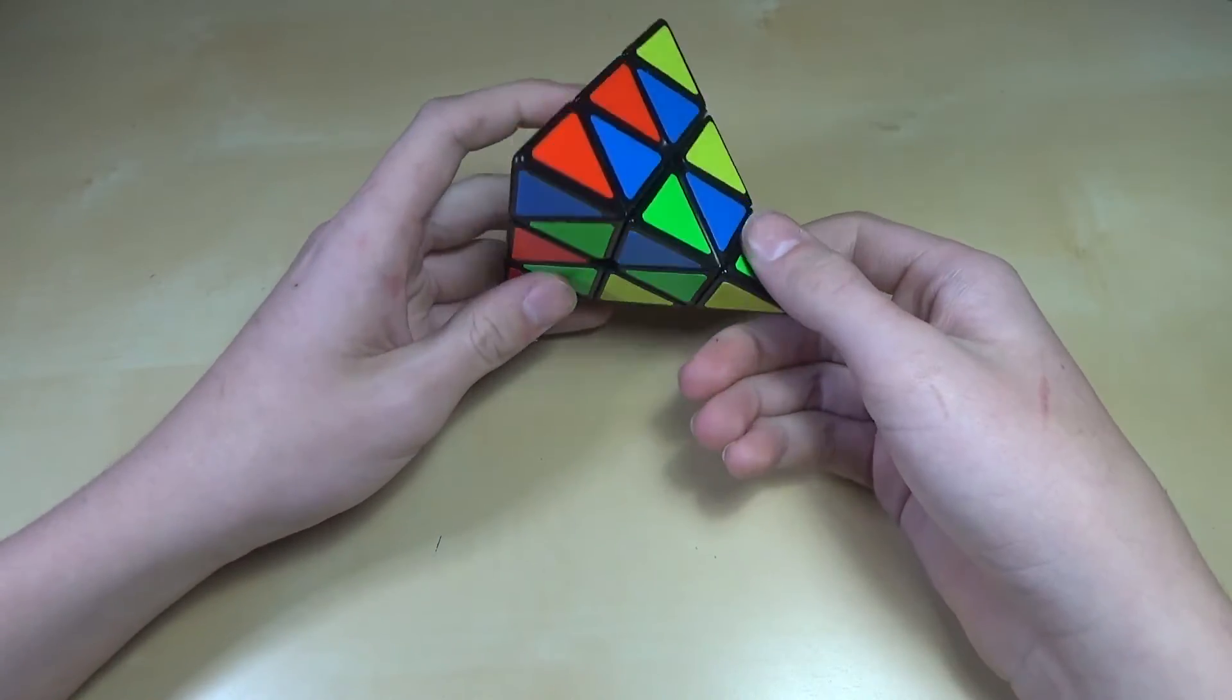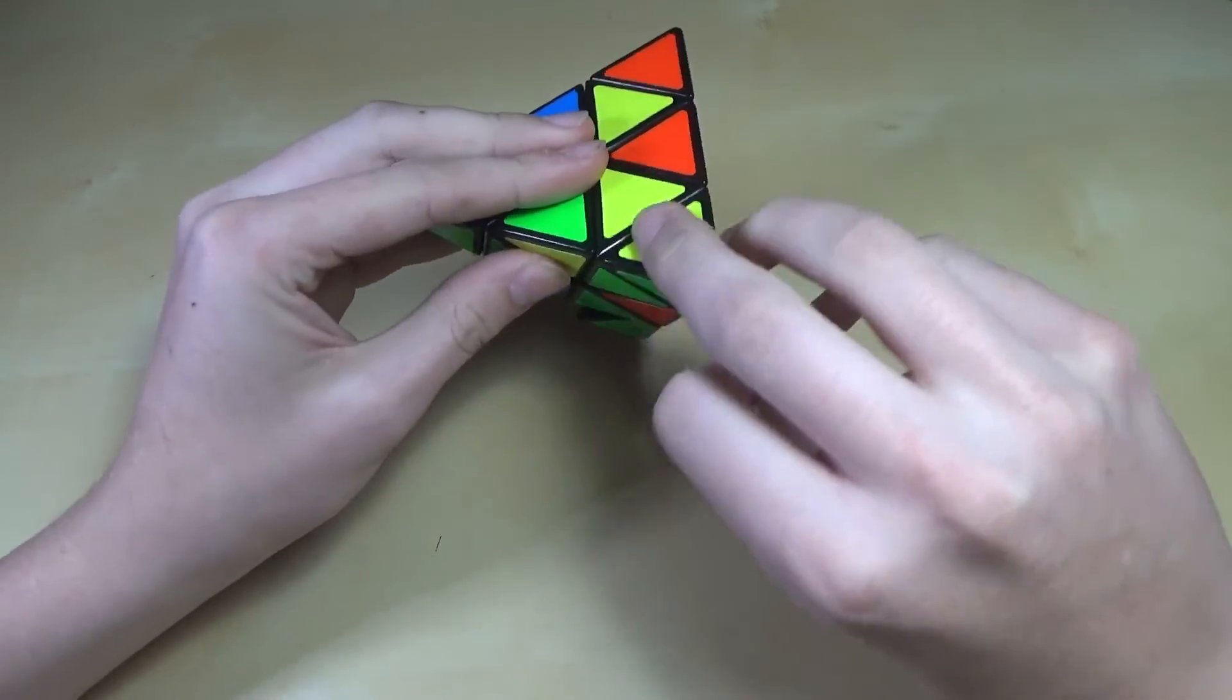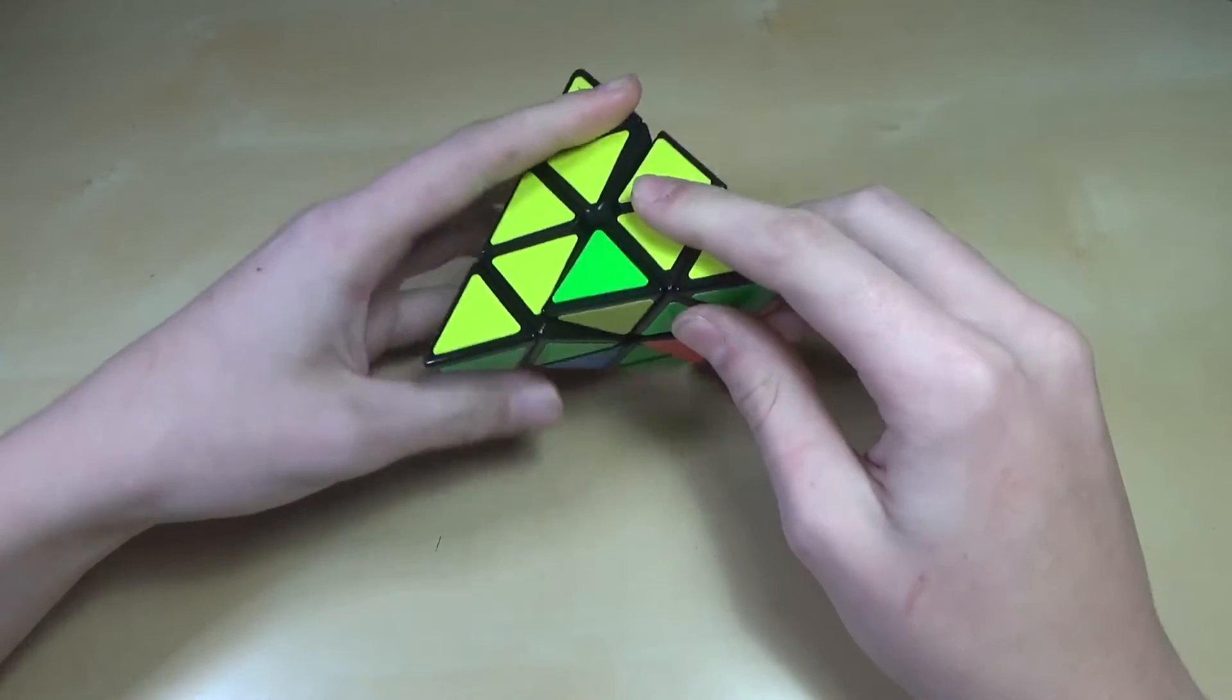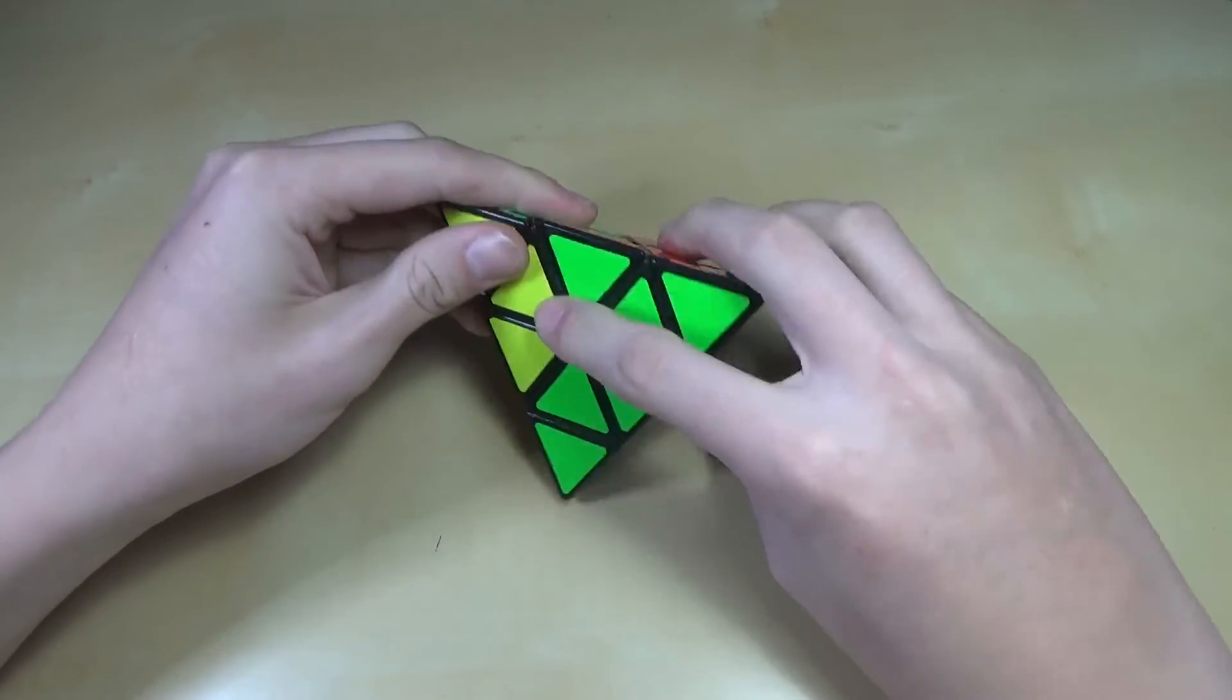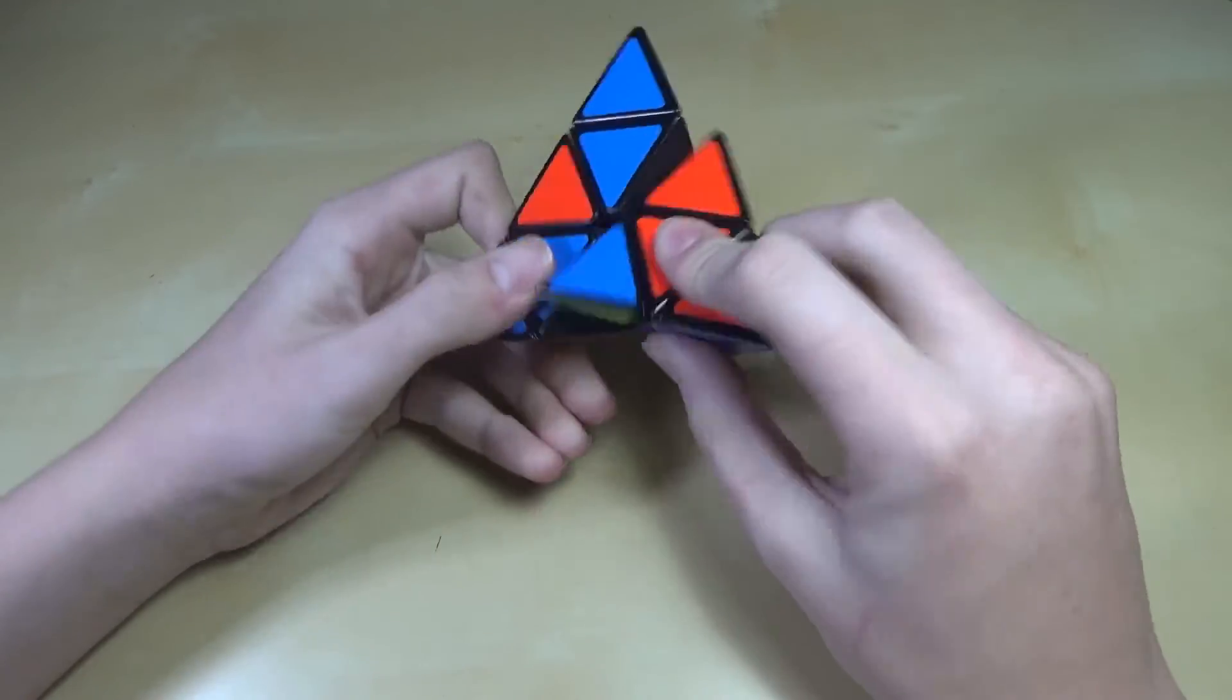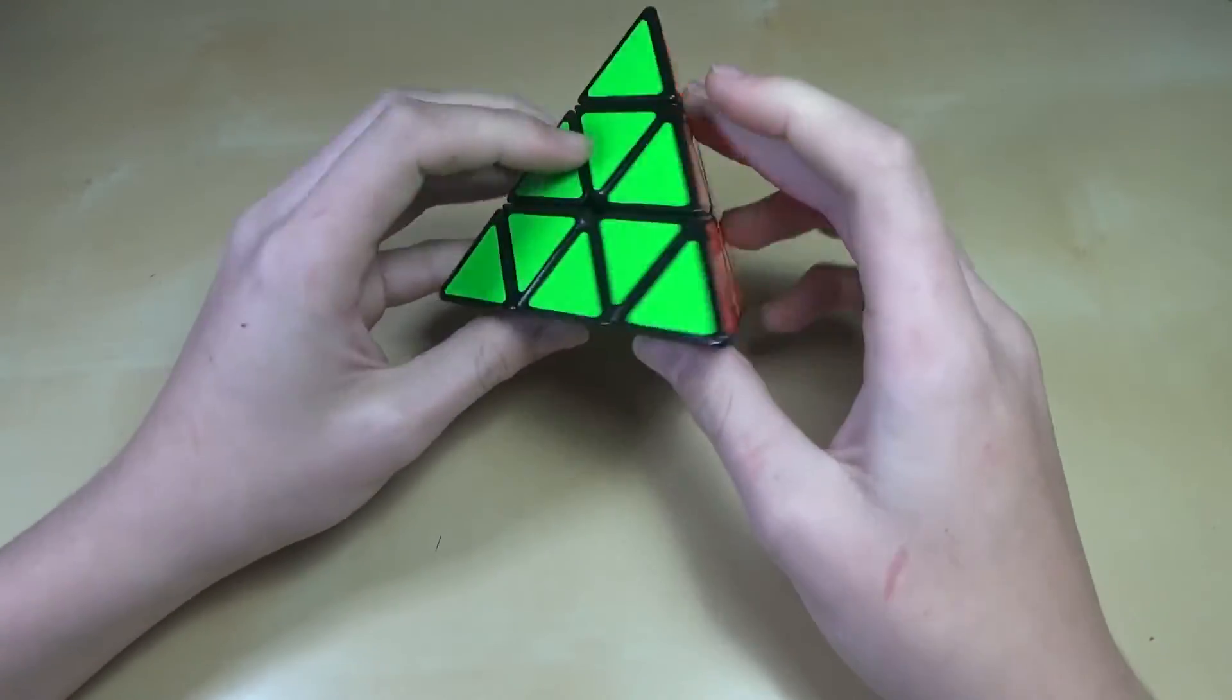And to undo it, it's just the exact opposite. Just undo the tip moves, and then do the exact same two-flip algorithm and it'll flip all the pieces back around. Just make sure to line it up on the top two pieces. Do the algorithm and there we go.